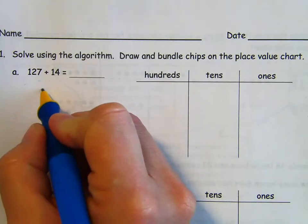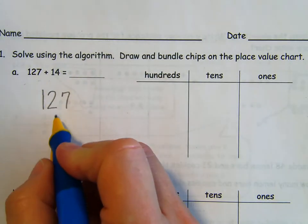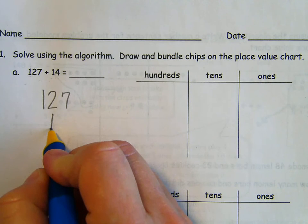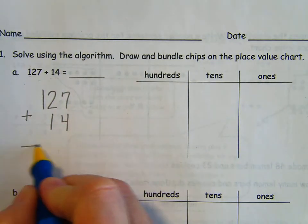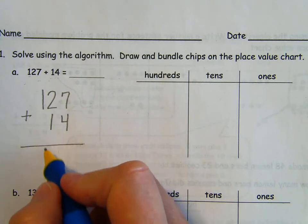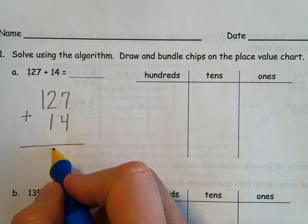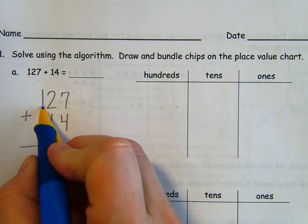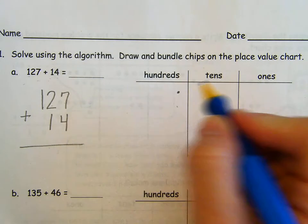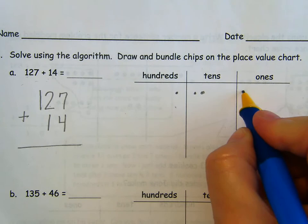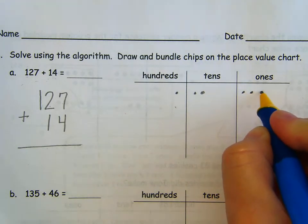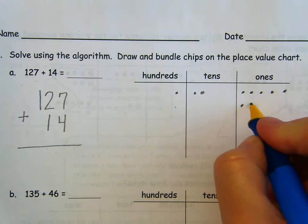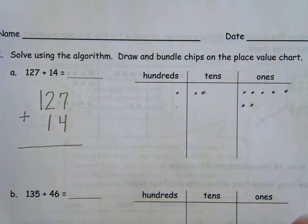127 plus 14. I'm going to remember to line my 14 up carefully because 14 doesn't have a hundred. It's got tens and ones. So we need one 10 in the tens place and four ones in the ones place. I also need to be careful when I'm putting my line at the bottom so that I leave enough room. If I have to bundle a 10 or a 100, I can add that down here. So we are going to go ahead and represent those numbers with chips in our place value chart. So we have 127, 100, 10, 20, counting up to 127.